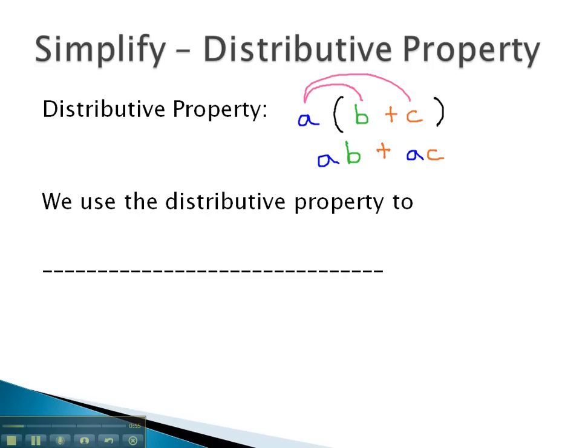The advantage of the distributive property is we can use it to clear parentheses. We clear the parentheses by multiplying the number out front by both of the terms on the inside. Let's take a look at some examples where we are allowed to do just that.